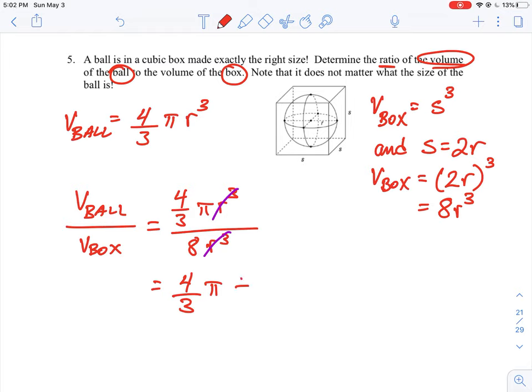So we're left with an expression that is simply going to be four-thirds pi. Remember the fraction means divide, so I'm just going to write it like this: four-thirds pi divided by eight. Now we could convert that to a decimal, but often in questions like this we just want to get it exact.